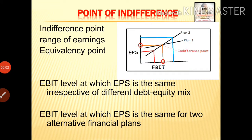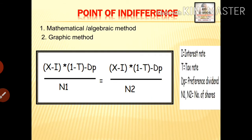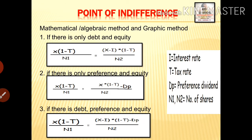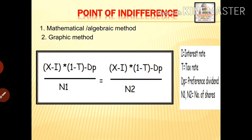Dear students, we have already discussed what is indifference point. It is the level of EBIT at which EPS is the same irrespective of different financial plans. Indifference point is calculated using the equation: (x minus i) into (1 minus t) minus dp divided by n1, equals (x minus i) into (1 minus t) minus dp divided by n2.